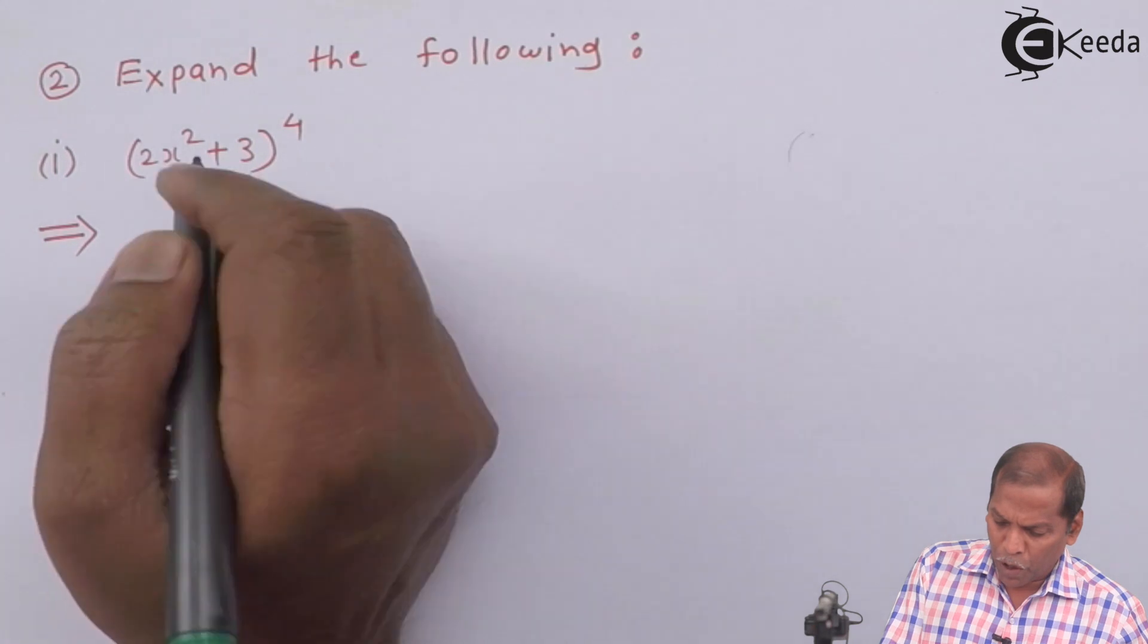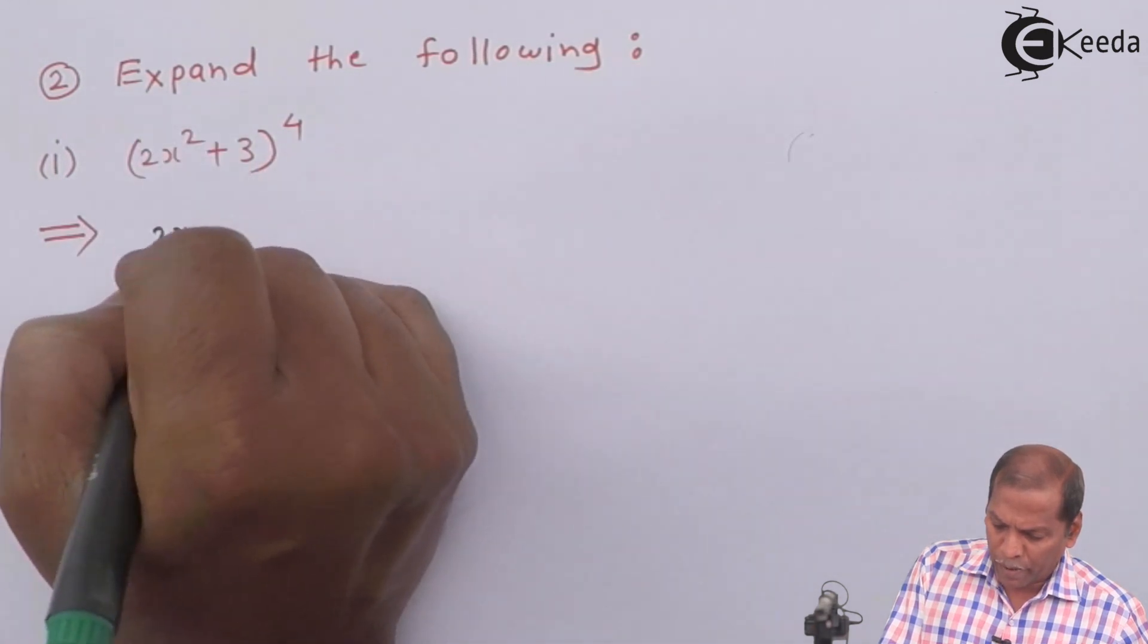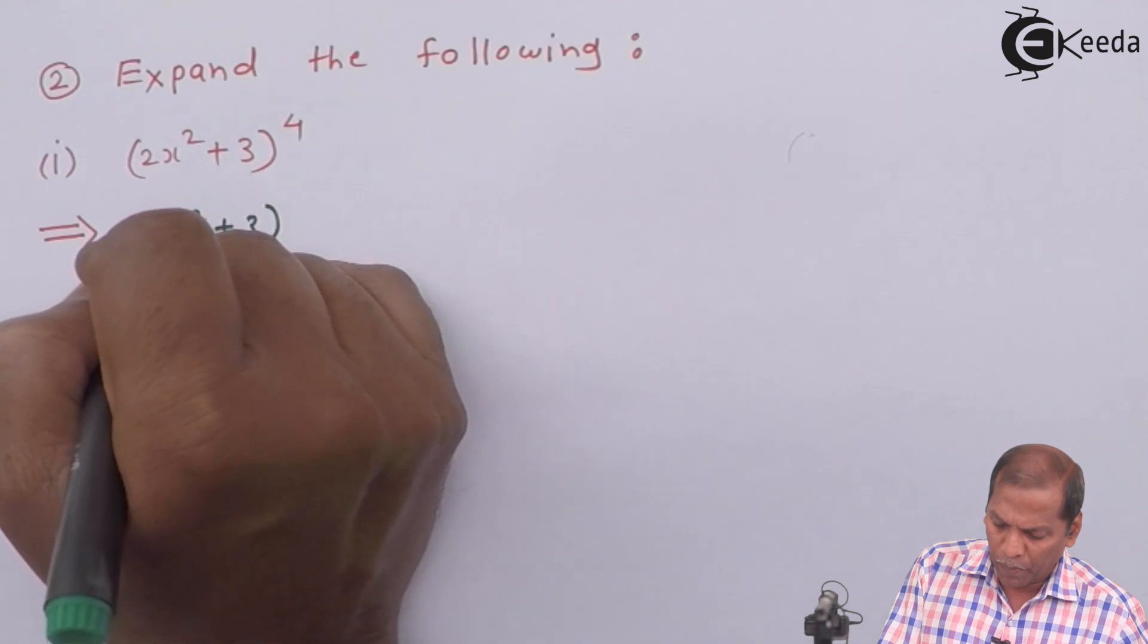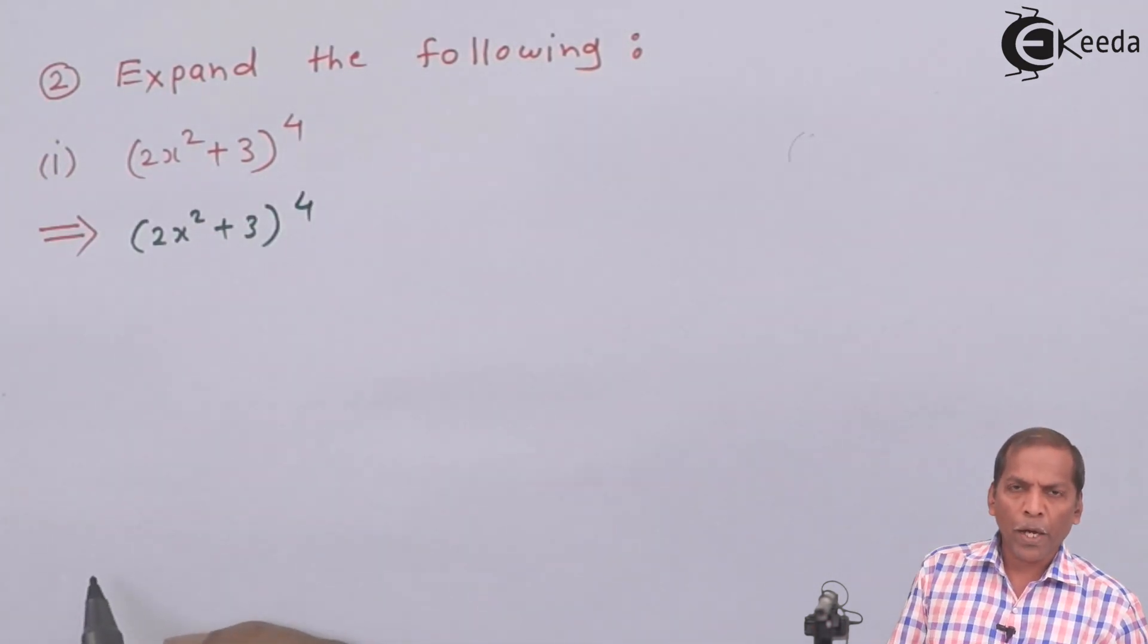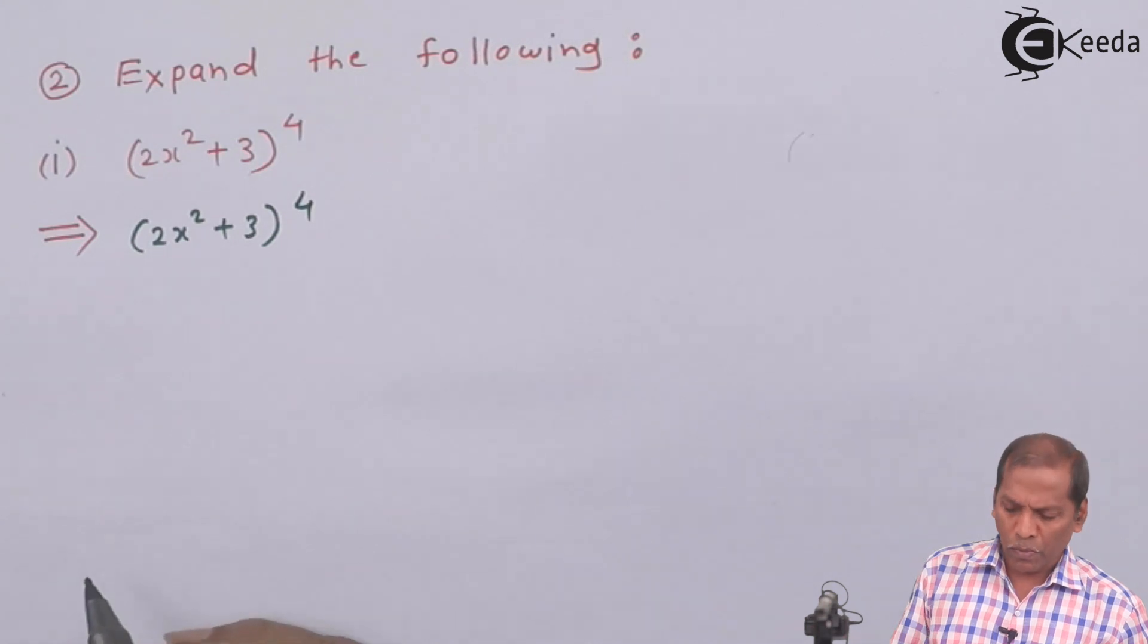First of all, we write (2x² + 3) whole bracket raised to 4. Then, by using binomial theorem, we have